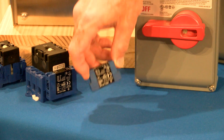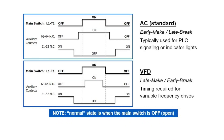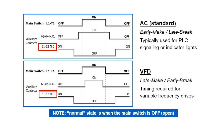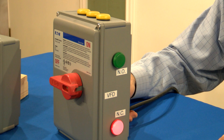Finally, let's talk about auxiliary contacts. Here's a timing chart showing how these interact with the main switch. Auxiliary contacts provide a way to send a signal to another device based on the state of the main switch contacts — open, which is off, or closed, which is on. The auxiliaries can be normally open or normally closed. Note that the normal state is when the main switch is off.